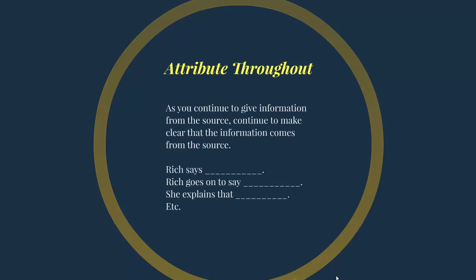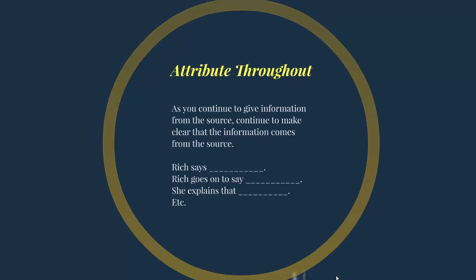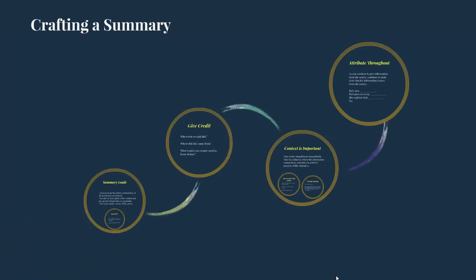Even if you've attributed at the beginning, throughout your summary you want to continue to attribute — to show that this information is coming from that source as you give each new piece of information. For example: 'Rich says...' then give the information. 'Rich goes on to say...' then give the information. 'She explains that...' then give the information. This is important even in a simple summary, because you're practicing the ability to show where information comes from. When your summary gets more complicated — summarizing two, three, or more authors — it becomes clear which information is attributed to which author, and which positions are your own.